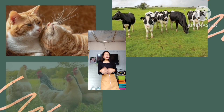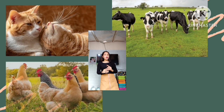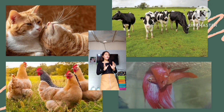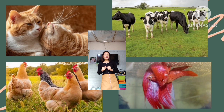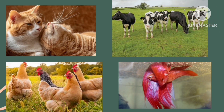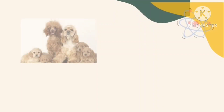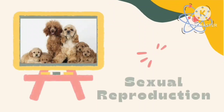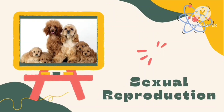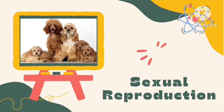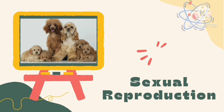Sexual reproduction takes place when sex cells from two parents — one male and one female — unite to form a new animal. When it's time to reproduce, the male dog gets very close to the female dog and puts sperm inside her body. The sperm fertilizes the eggs. Once the eggs are fertilized, they begin growing inside the female dog's body.